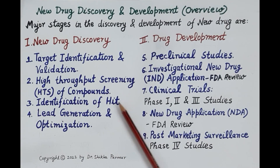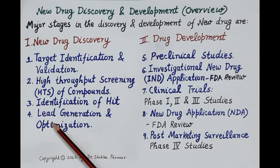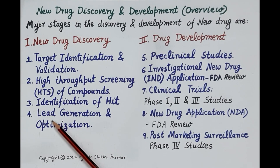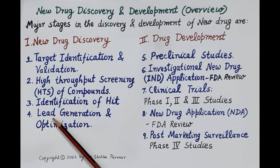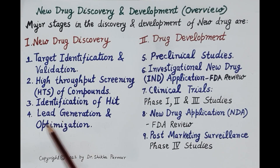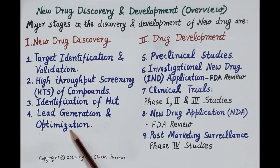From the 100 to 200 hits, dozens of lead compounds with higher affinity and higher selectivity for the target are identified. Leads interact only with the specific target, excluding all other related targets. The next step is lead generation and optimization.